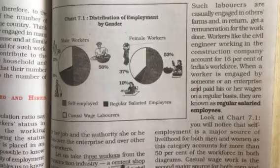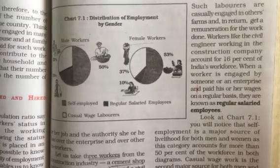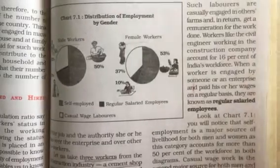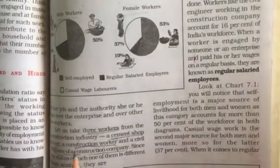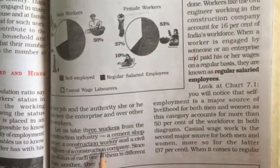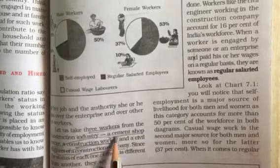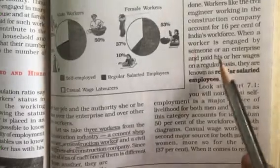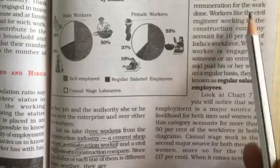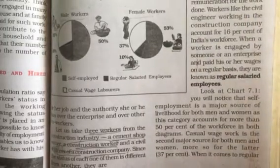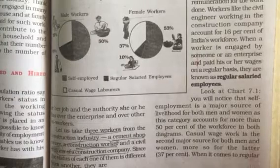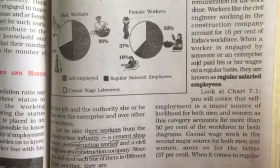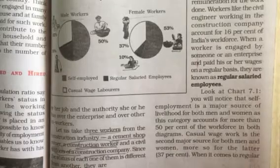When we were talking about the example, we had a cement shop owner and a construction worker. This construction worker will definitely be a casual wage laborer. He belongs to the category of casual wage laborer because now construction is going on, so he has work and he is paid daily wages. Later on, if there is no construction, he will not be paid.